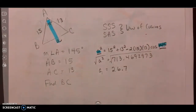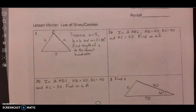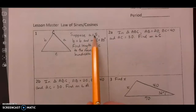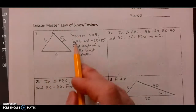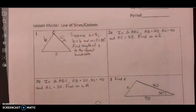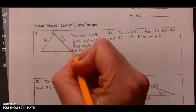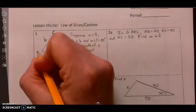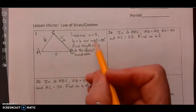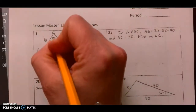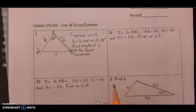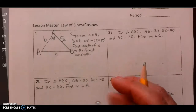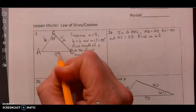Now we're going to move on to the lesson master. Number one: I've got my triangle where side a is 5 — go ahead and label that — so this right here is 5. Side b is 6, so this would be 6, which means this must be angle B. This must be angle A, because it's across from A. And the measure of angle C is 80 degrees. Notice I have side-angle-side, which means I want to use Law of Cosines. I'm asked to find the length of C.